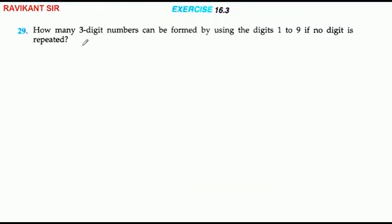How many three-digit numbers can be formed by using the digits 1 to 9 if no digit is repeated? This means no digit repeats - we have to use digits 1 to 9, and from these nine digits we need to select three.